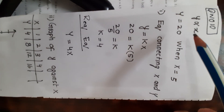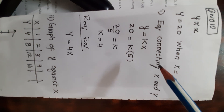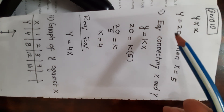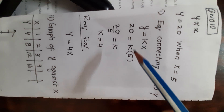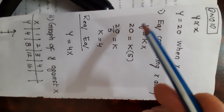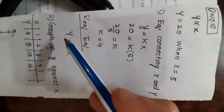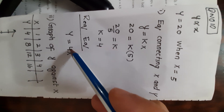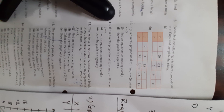Question number 10: y is directly proportional to x, and y is 20 when x is 5. From these two values, find k: 20 over 5 gives k equal to 4. Part one asks for the equation connecting x and y: since y equals kx and k is 4, the equation is y equals 4x.